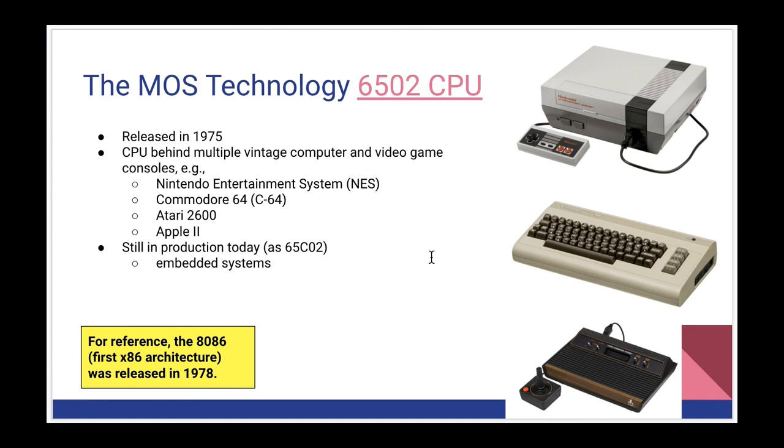Lest you think it's old compared to modern systems, the first x86 architecture, which x86 is the 32-bit version of the x64 processors we have now, was released in 1978. So the Intel and AMD style processors we're used to using today are almost as old as the 6502 that we're going to be looking at.